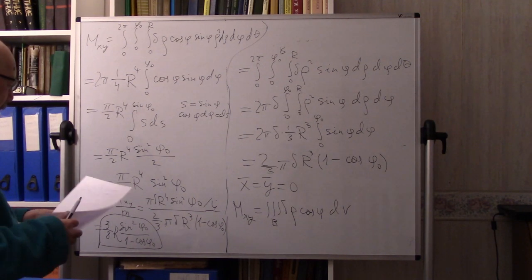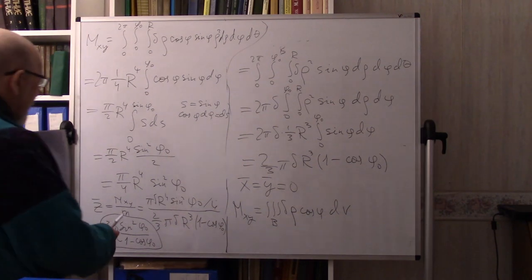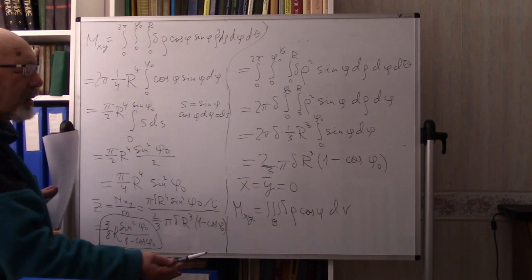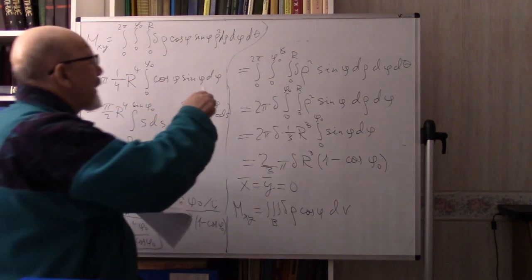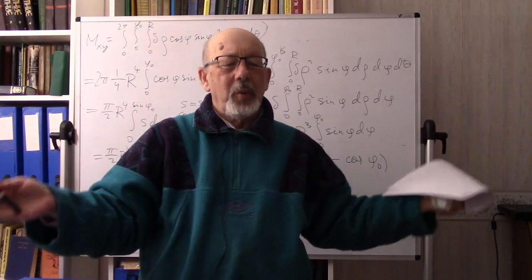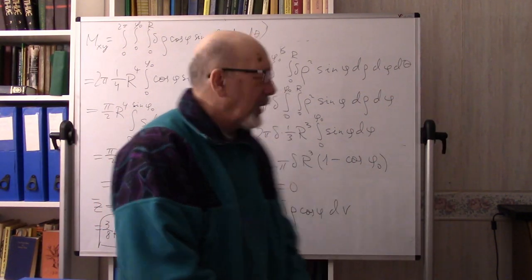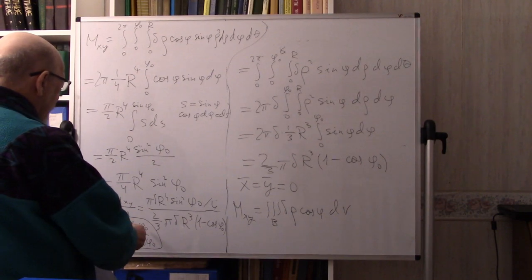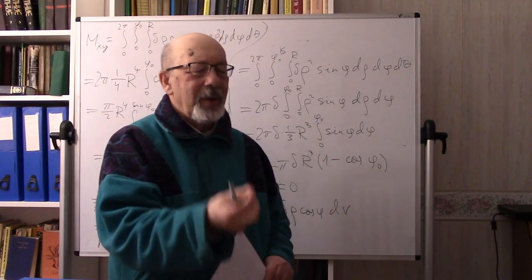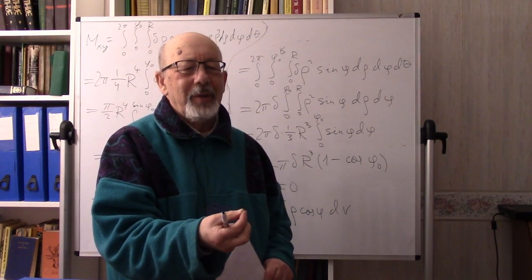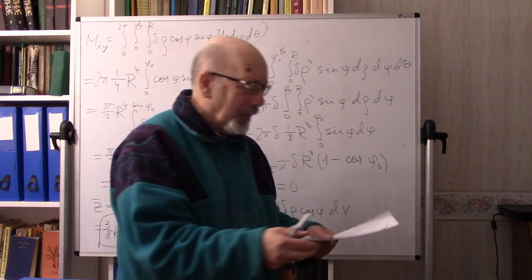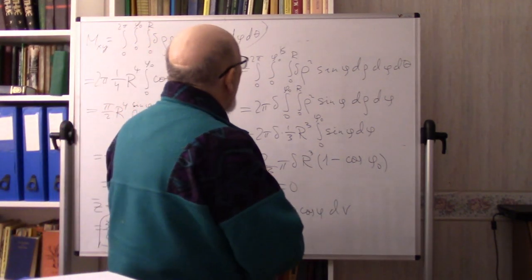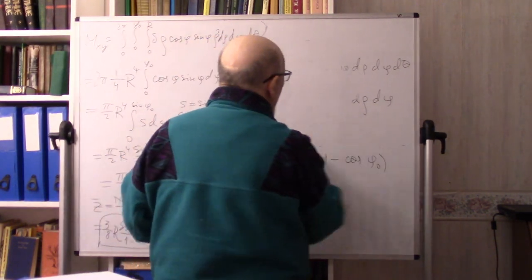Next I want to find the moment of inertia of the drumstick. I_z equals the integral over B of δ(x² + y²) dV. This is the moment of inertia about the z-axis. If you rotate this body around the z-axis, the kinetic energy equals (1/2)I_z ω², where ω is the angular velocity — it plays the role of mass for rotational motion.